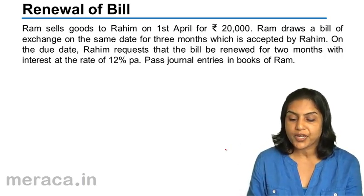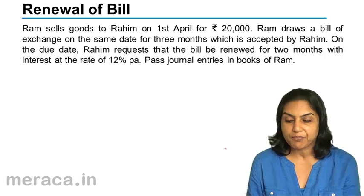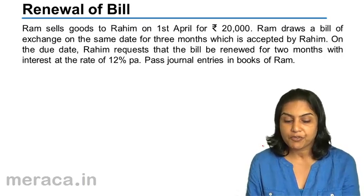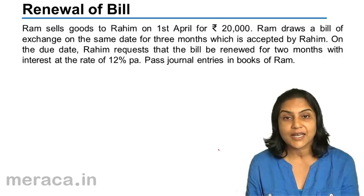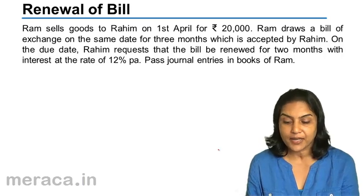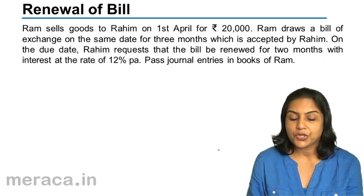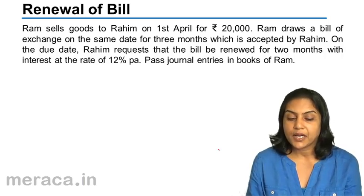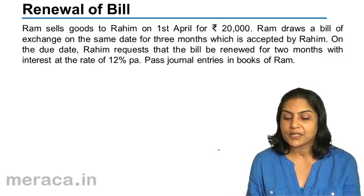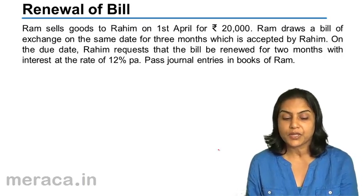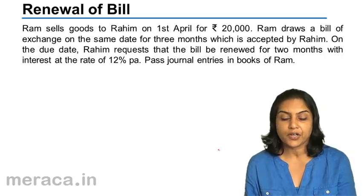Ram sells goods to Rahim on 1st April for 20,000. Ram draws a bill of exchange on the same date for three months, which is accepted by Rahim for 20,000. Three months later, on the due date, Rahim requests that the bill be renewed for two months with interest at the rate of 12% per annum.